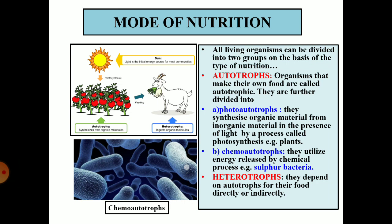Chemoautotrophs utilize energy released by chemical processes. Chemical reactions are basically of two types: exothermic reactions and endothermic reactions. Exothermic reactions release energy, and this energy is taken up by chemosynthetic bacteria and other organisms and utilized to make food.